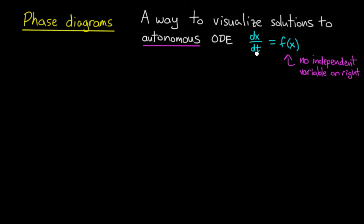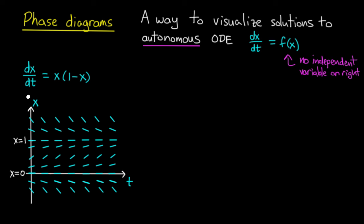The independent variable is not used in the definition of the differential equation. I'll show you how to construct phase diagrams through an example. Let's consider the differential equation dx/dt equals x(1-x). This is autonomous because the independent variable t does not appear on the right-hand side.